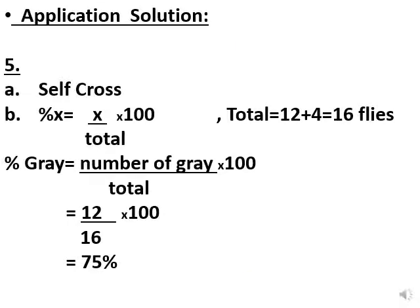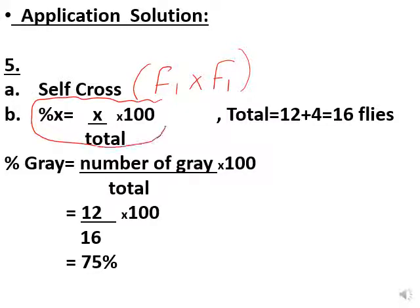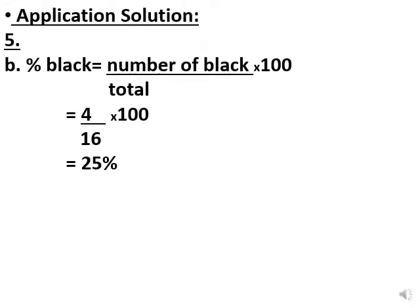Step by step: this cross is a selfie cross. Total = 12 + 4 = 16. Percentage of gray = 12/16 × 100 = 75%. Percentage of black = 4/16 × 100 = 25%.